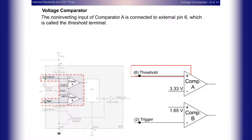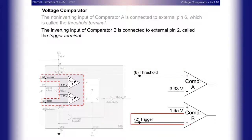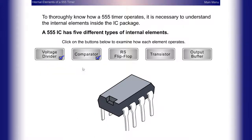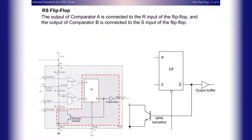The outputs of both comparators are never positive voltages at the same time; however, there are times when they are simultaneously at zero volts. The non-inverting input of comparator A is connected to external pin six, called the threshold terminal. The inverting input of comparator B is connected to external pin two, called the trigger terminal. The voltages at the comparator outputs provide logic levels that control the RS flip-flop. The output of comparator A is connected to the R input of the flip-flop, and the output of comparator B is connected to the S input.